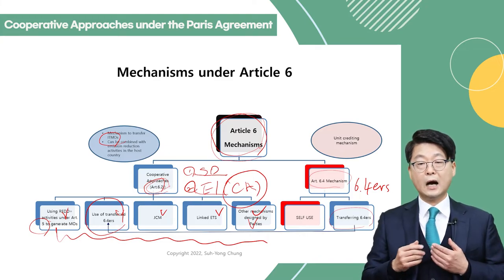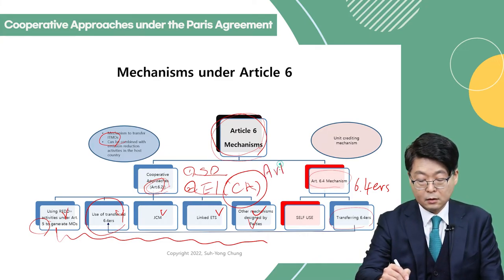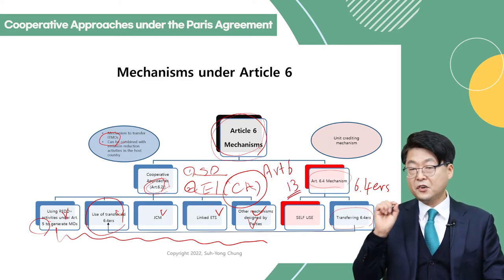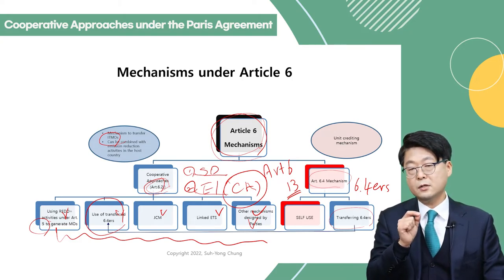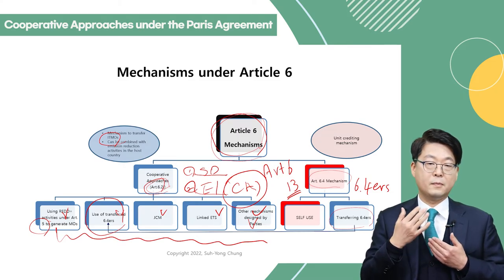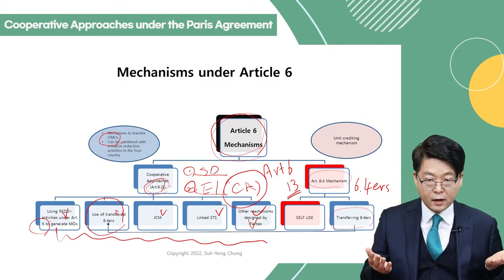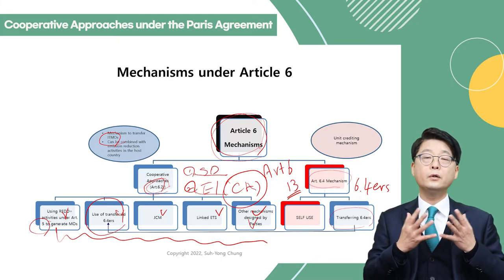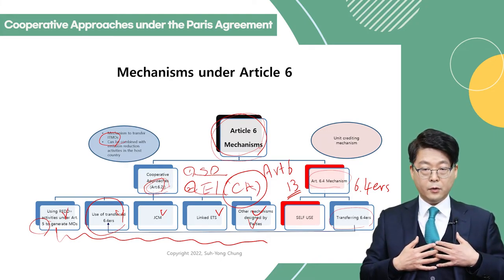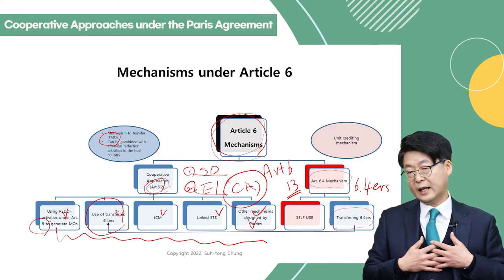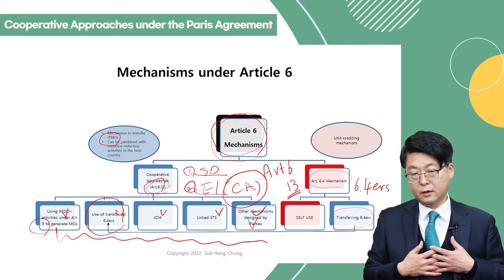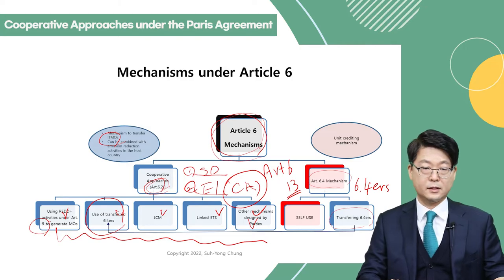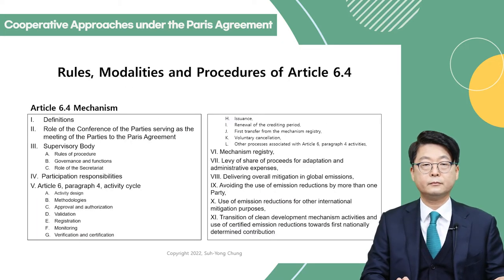The detailed rules for corresponding adjustments are governed not only by Article 6 but also by Article 13 of the Paris Agreement, which concerns transparency requirements — in other words, MRV, submitting Biennial Transparency Reports (BTRs), and national inventories. Whenever you deal with implementing Article 6 toward NDCs, you must consider fulfilling both Articles 6 and 13. This is also very important.